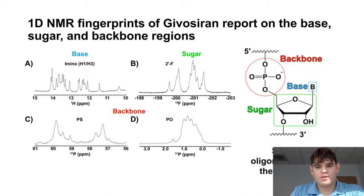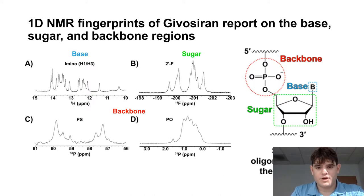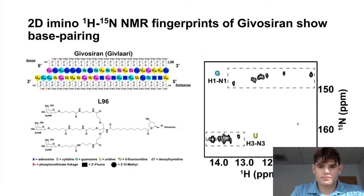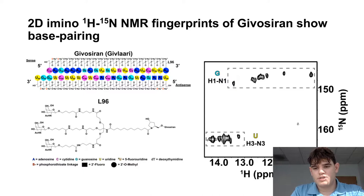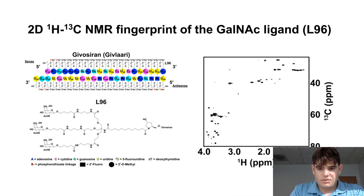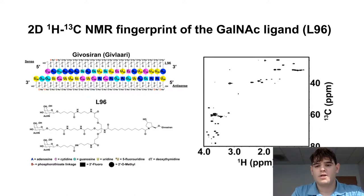Shown here are the 1D NMR fingerprints of Givosiran. As you can see, they report on a variety of structural features — both at the base in the case of the amino proton region, at the sugar as shown with the 2'-fluoros, and at the backbone, showing both the phosphate and the phosphorothioate signals. The 2D NMR dataset shown here is the amino correlations, and everything is nicely resolved — the U's resonate around 160 to 165 ppm in the nitrogen chemical shift and all the G's around 145 to 150 ppm. We also have a proton-carbon fingerprint of the GalNAc ligand that is unique to Givosiran, allowing us to obtain a fingerprint of that ligand specifically.